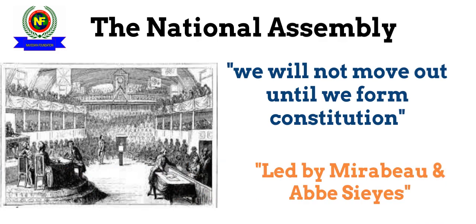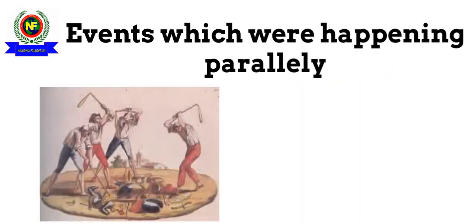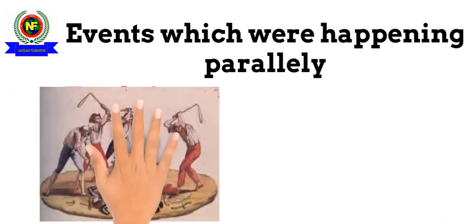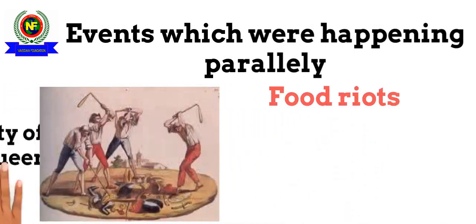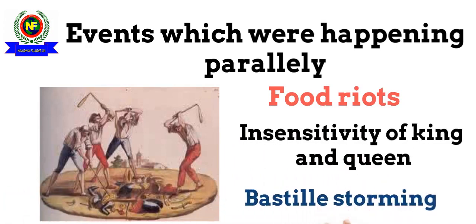They called themselves the National Assembly, which was led by two leaders — Mirabeau and Abbé Sieyès — both of whom belonged to the privileged classes, that is the first and second estates, but were sympathetic to and upheld the rights of the third estate. These events were happening in parallel with food riots, the insensitivity of King Louis XVI and his queen, and the Bastille Riot, all in the backdrop of the formation of the National Assembly and the storming out of the third estate.